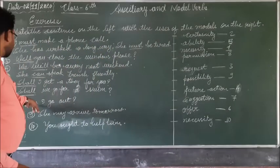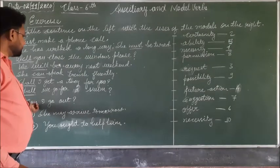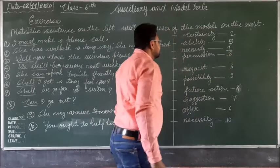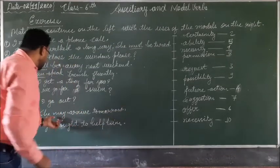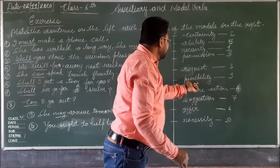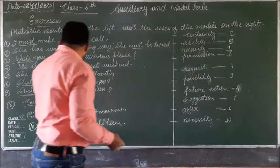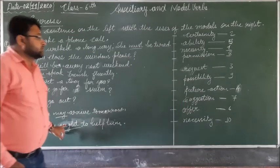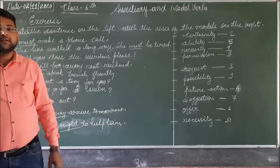Ninth sentence: 'She may arrive tomorrow' — may is used to express possibility. Strong possibility uses may, and might is used for weak possibility. Last sentence: 'You ought to help him' — ought is used to express necessity. So in this video, the chapter of auxiliaries and modal verbs is completed.